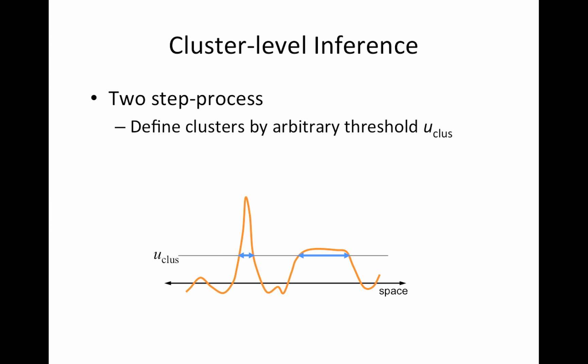Cluster level inference instead uses a two-step process. So this is what you most likely have used if you've analyzed fMRI data. And I think sometimes people are confused depending on the software, like, why are there two thresholds? Well, here is why. The first threshold is just defining clusters. So the idea here is that no single voxel, you know, how much faith do you have that that voxel is exactly where the activation is? Instead, we're interested in the clusters as a whole.